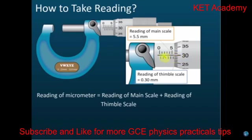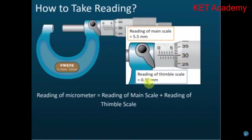For the thimble scale, we read from here to see which line coincides with the straight line on the main scale. This is 30. It coincides with the straight line on the main scale, so the reading is 30. But 30 is not 30mm - it's 0.30mm. Each mark represents 0.01mm, so 30 means 0.30mm.